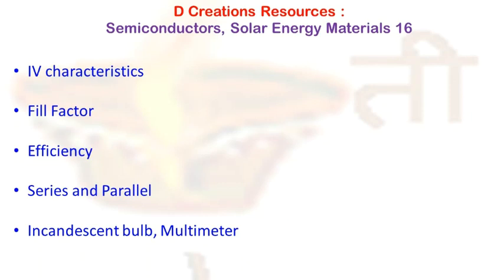The fill factor is a ratio — the ratio of the maximum power from the solar cell to the product of VOC and ISC. Maximum power is the product of VMP and IMP. So the fill factor in terms of a ratio will be VMP × IMP divided by VOC × ISC.